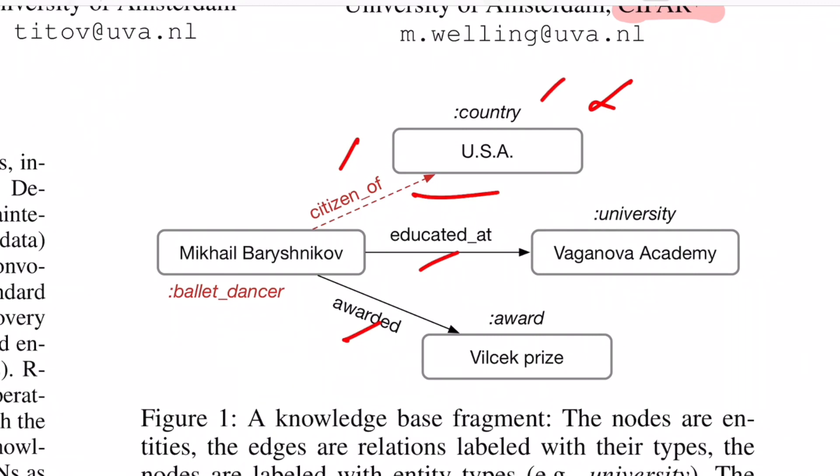For example, this is of country type, this is university, this is award, and this is ballet_dancer. So yeah, this is what I was talking about. This is what exactly a knowledge graph looks like, and also you can see you have these directed edges which kind of say this was awarded this award, then this educated at this university. So this is the kind of relation that we're trying to infer from such graphs.